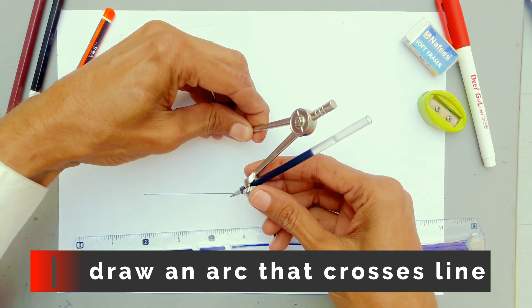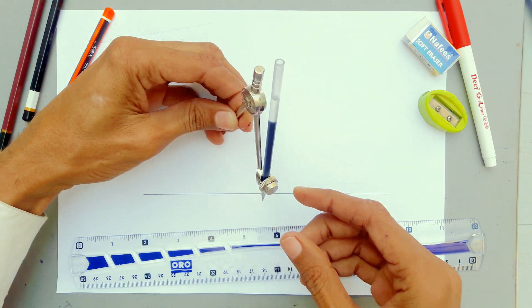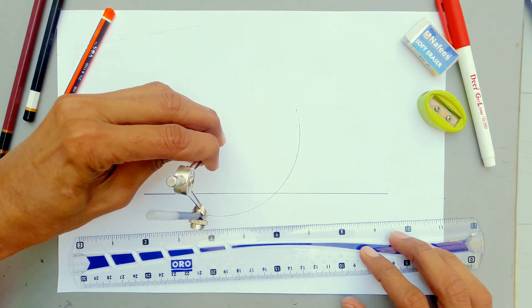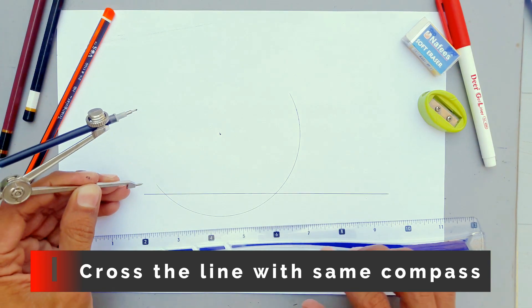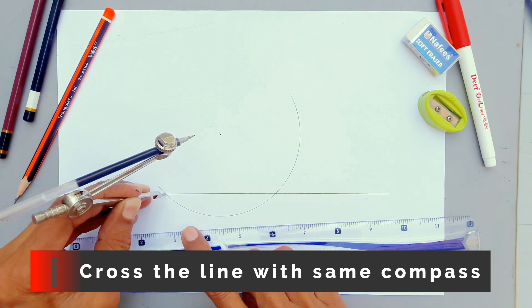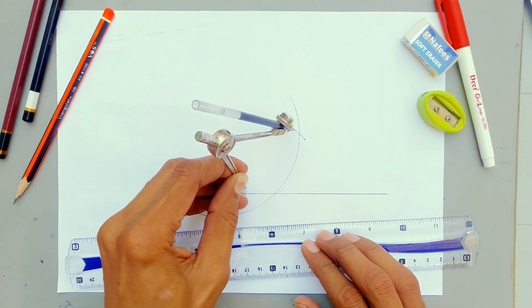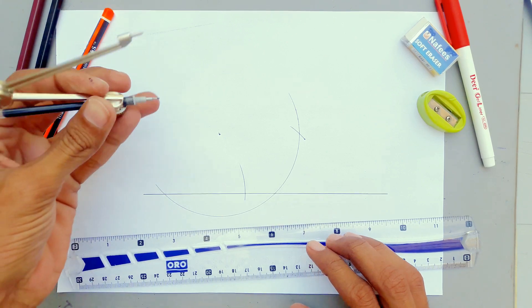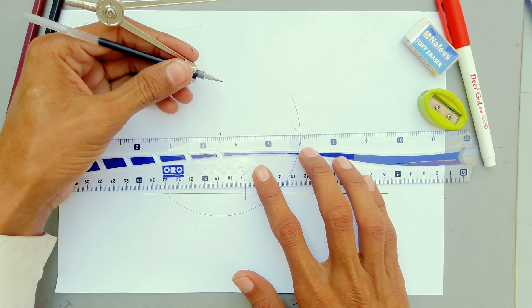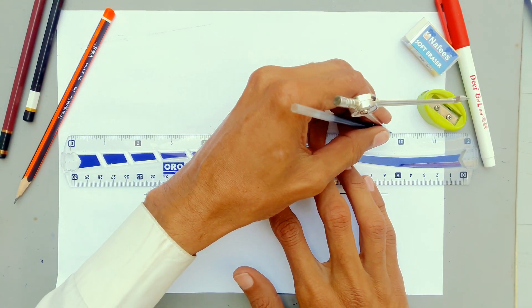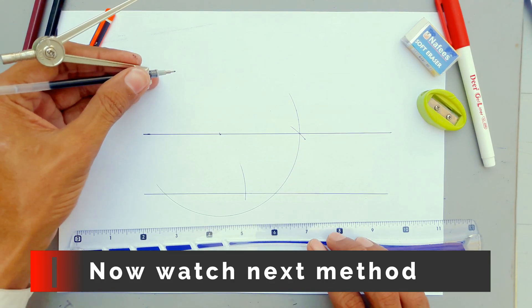Draw an arc that crosses the line. Cross the line with the same compass. These are parallel lines. Now watch the next method.